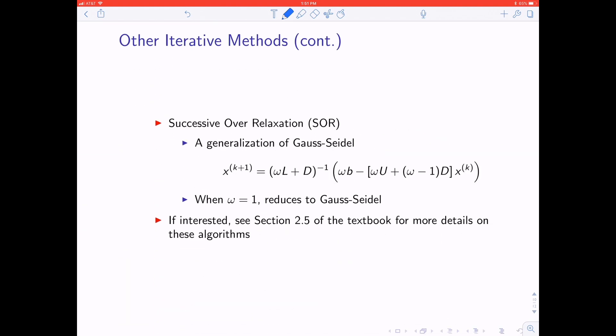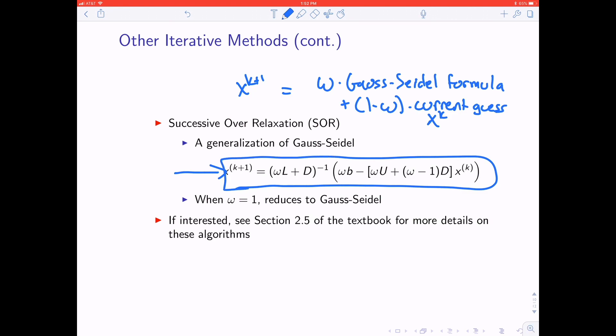Finally, one last method is successive over relaxation. I think the formula is written down here, but I think knowing the intuitive explanation is more useful. The intuitive explanation is that at every time step, if you take a weighted average, it's something like omega times the Gauss-Seidel formula, and then it's plus 1 minus omega times your current guess, which is XK. And that's what your new guess, XK plus 1, is going to equal. If you were to plug in everything you know, you'd come up with an expression that looks something like this here.